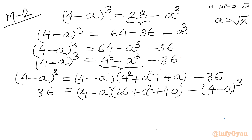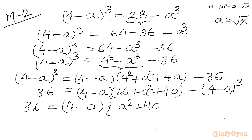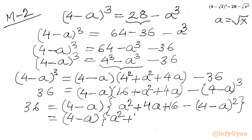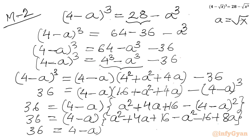Now (4 - a) is common on the right-hand side. Factoring it out: 36 = (4 - a)[a² + 4a + 16 - (4 - a)²]. Expanding (4 - a)² = a² - 8a + 16: the a² and 16 terms cancel, leaving 36 = (4 - a)(12a). So 36 = 12a(4 - a).